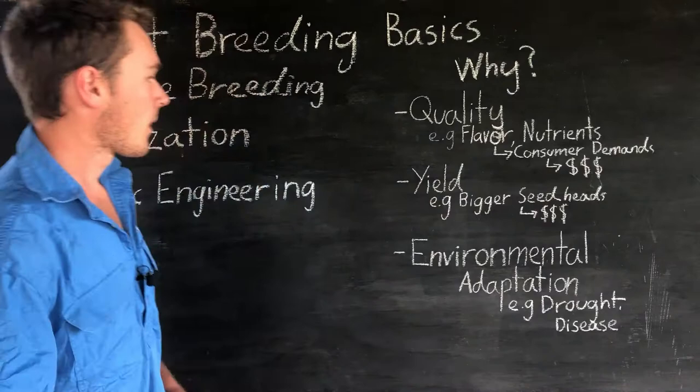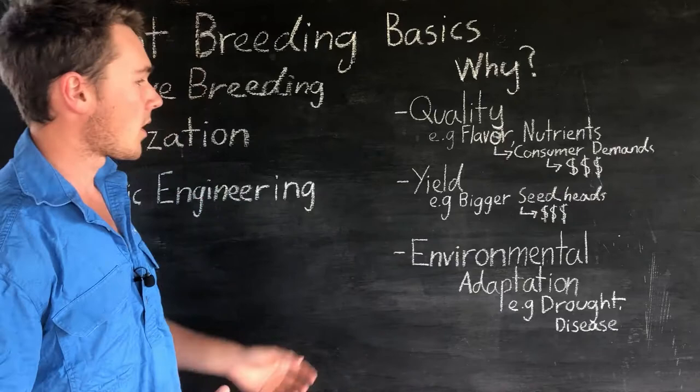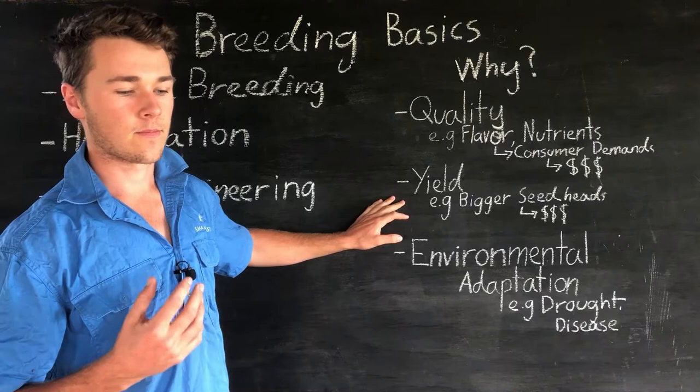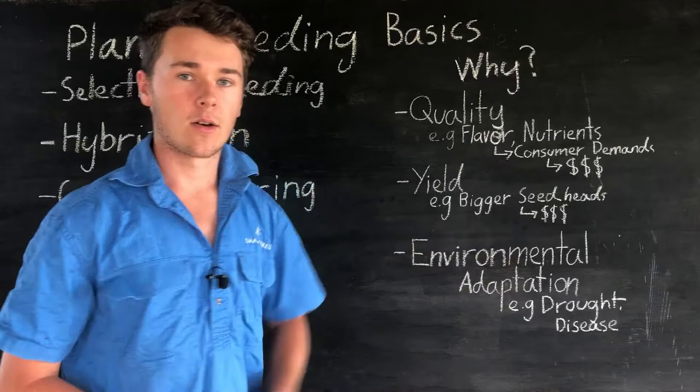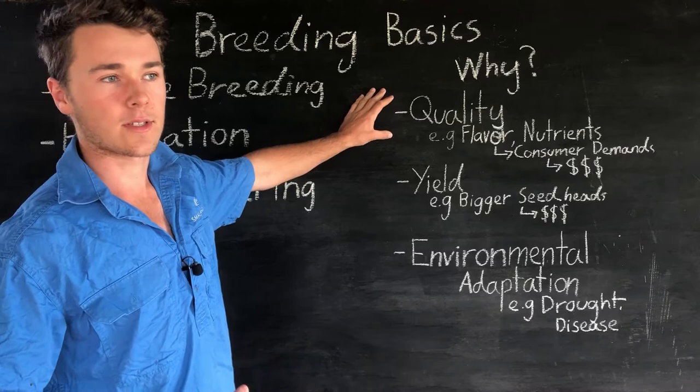Next, yield. We can increase what we can produce. For example with wheat, if we can make a bigger seed head we can increase the amount of wheat produced per hectare, and that's going to increase our supply and our income. Making money — it's pretty much increasing our profits and income at the end of the day.